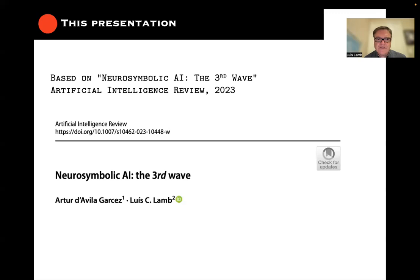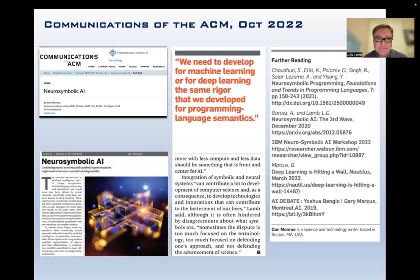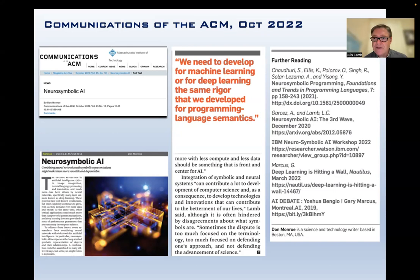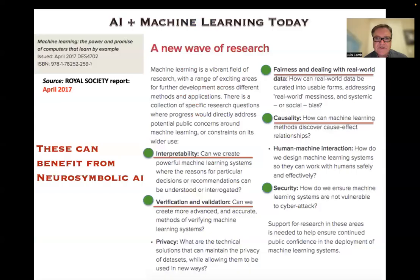This talk is based on 'Neurosymbolic AI: The Third Wave,' a recent paper published by Arthur Garces and myself. Looking at current literature, several papers address the need for building systems that are more semantically sound and offer guarantees to users. We claim that to build such systems, we need to bring the same rigor developed for programming language semantics into machine learning — including techniques such as model checking.